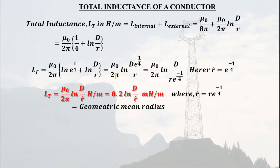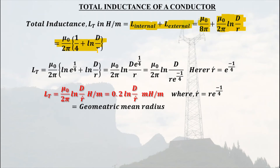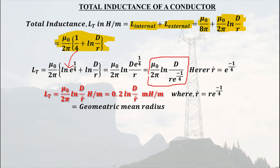Total inductance equals internal inductance plus external inductance, both in henry per meter. Internal inductance was derived in the previous lecture as μ₀/(8π), and external inductance derived here is μ₀/(2π) · ln(d/r). Adding these two gives the expression for total inductance. Simplifying further, this can be written as μ₀/(2π) · ln(d / (r · e^(−1/4))).